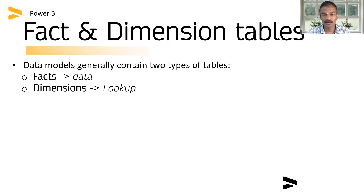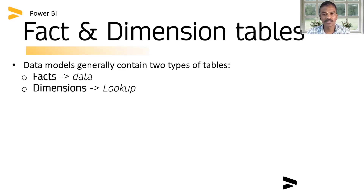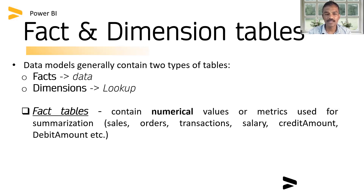In database terminology, there are facts, measures, and metrics. If you have a question about whether facts have measures or metrics, we can understand that these are all referred to as facts. Sometimes they are called metrics, sometimes measures. We don't need to get confused by them — we will refer to them all as facts. Fact tables store all this information.